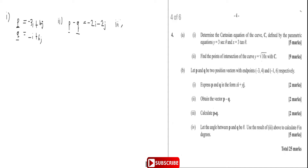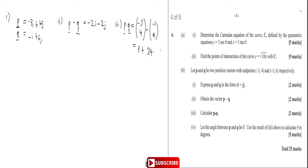Vector p dot q — for the dot product I'm going to write it in column vector form. So I have minus three, four dot minus one, six. This works out to be minus three times minus one, which is three, plus four times six which is 24. Twenty-four plus three is 27. So p dot q equals 27.